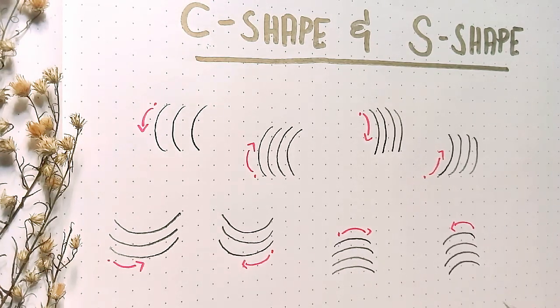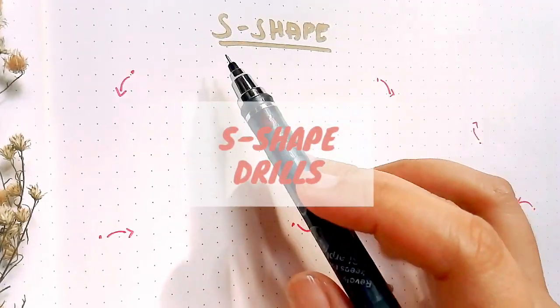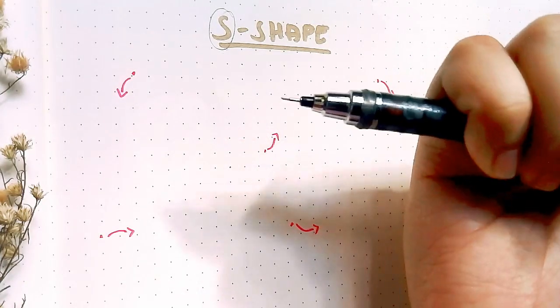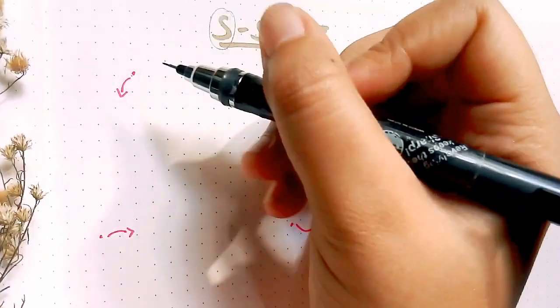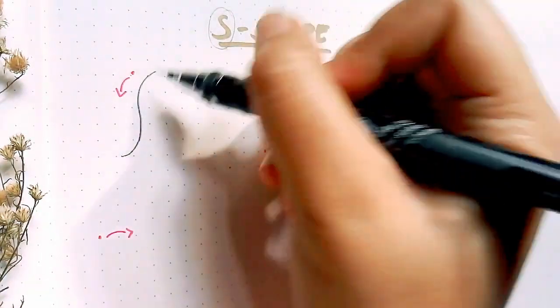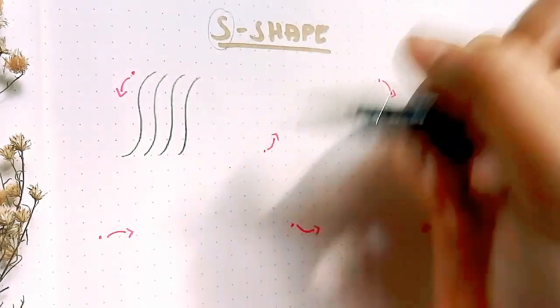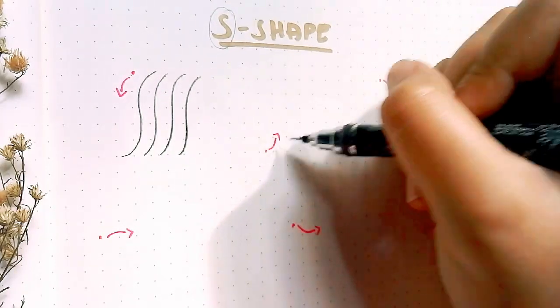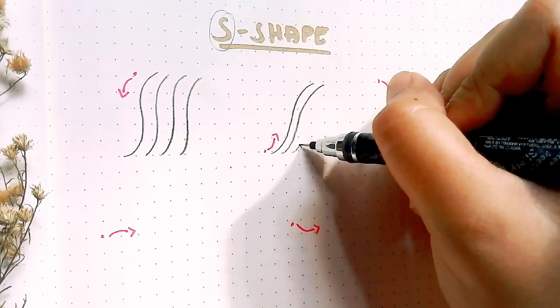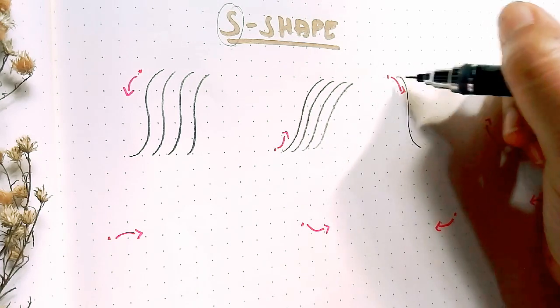And that's it for C shape. So let's go now to S shape. Same thing with C shape, but here the lines are like the letter S.